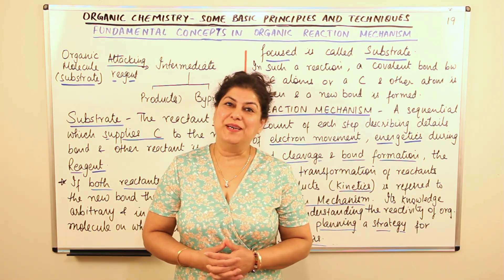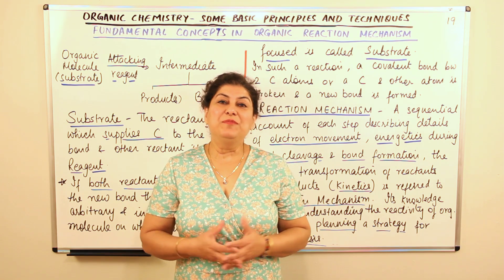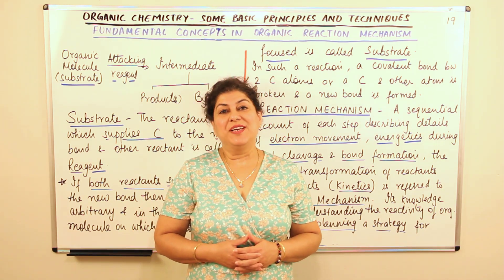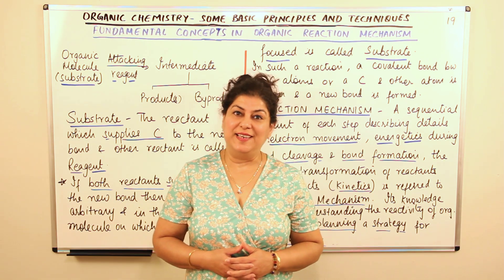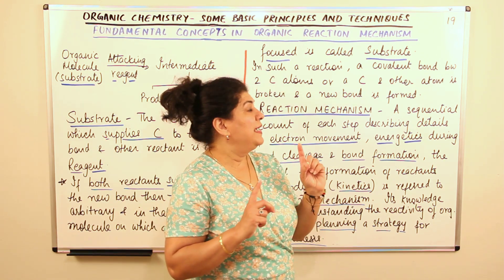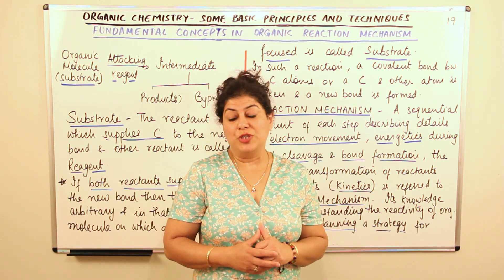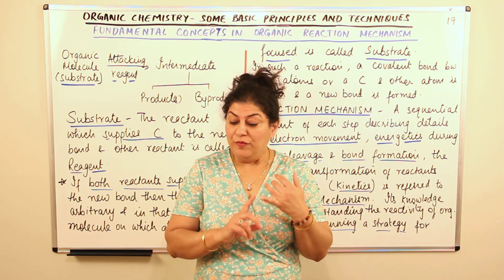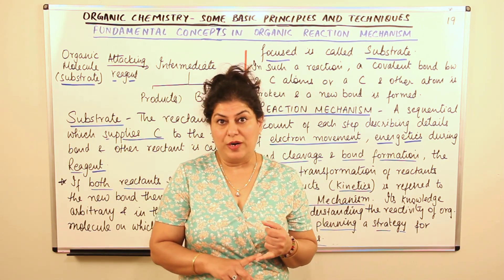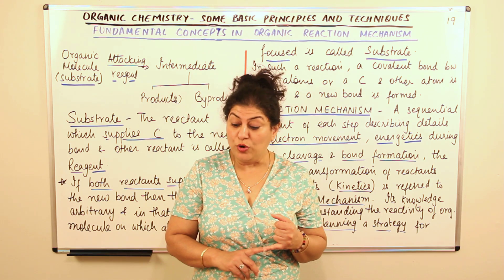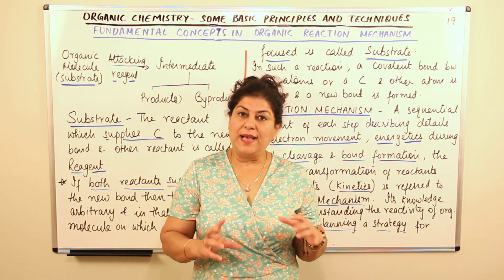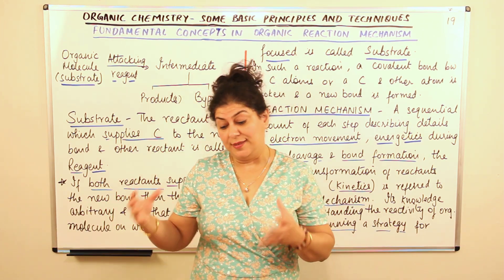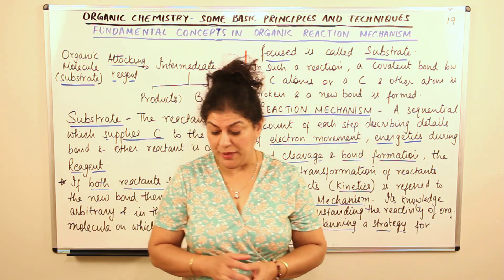Hello, I am Seema and welcome to part 19 of the chapter Organic Chemistry: Some Basic Principles and Techniques. In the previous 18 videos we have covered the following subtopics: we talked about the tetravalence of carbon, that carbon has a valency of 4, and as a result it forms so many compounds, giving rise to the branch of organic chemistry.